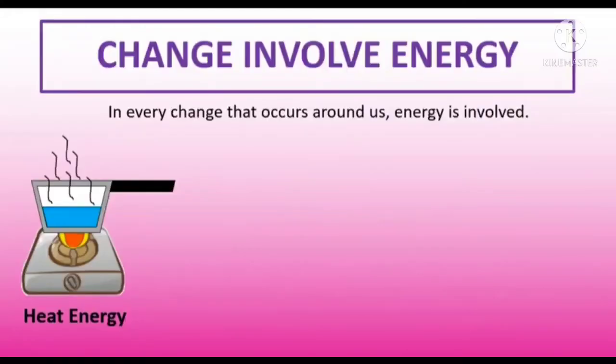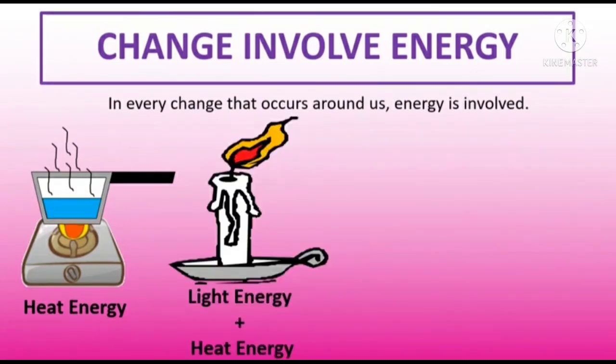Children, in every change that occurs around us, energy is evolved. This energy may be heat energy, light energy, sound energy, etc. Energy is either absorbed or produced during every change. For example, when we boil something, heat energy is evolved. When we light a candle, both light and heat energy are involved. This means that energy is either absorbed or produced during every change.